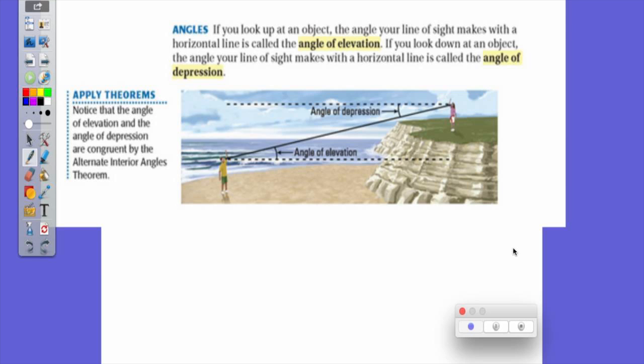Okay, you're going to read really loud? If you look up at an object, the angle your line of sight makes with the horizontal line is called the angle of elevation. If you look down at an object, the angle of your line of sight makes with the horizontal line is called the angle of depression.